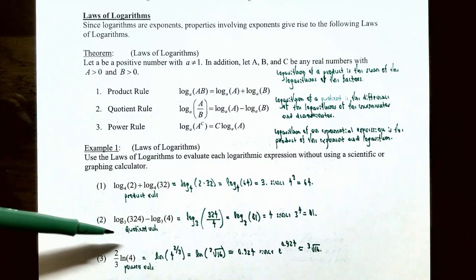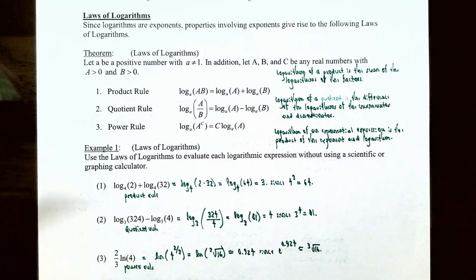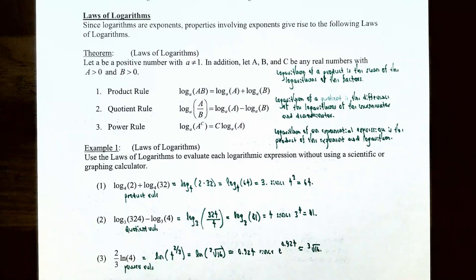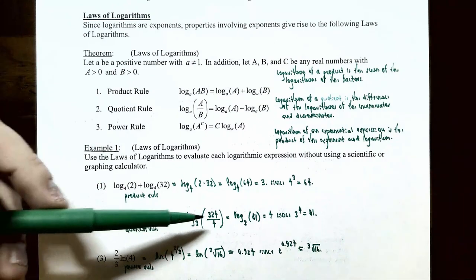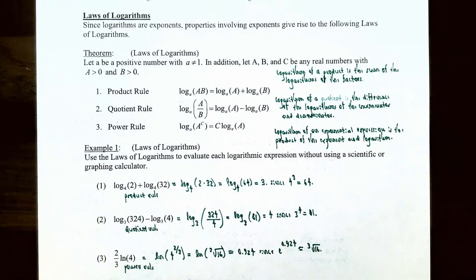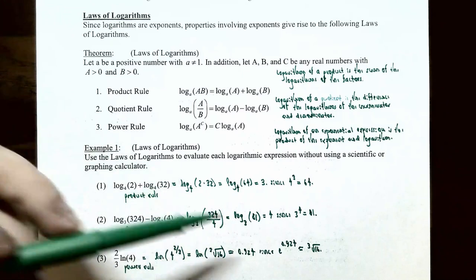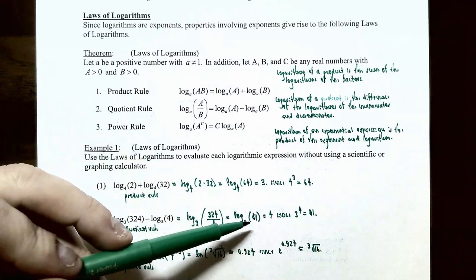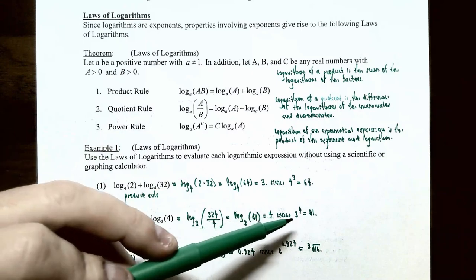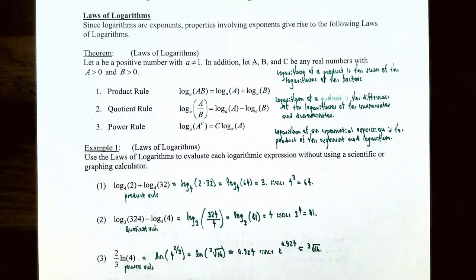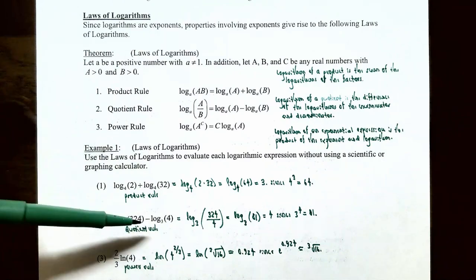Number two: log base 3 of 324 subtract log base 3 of 4. Both logarithms have base 3 and you are subtracting them, so use the quotient rule. Rewrite as log base 3 of 324 divided by 4. Simplifying the fraction gives log base 3 of 81. Since 3 to the fourth power equals 81, log base 3 of 81 equals 4. So log base 3 of 324 minus log base 3 of 4 equals 4.